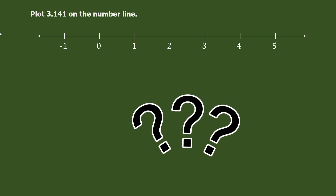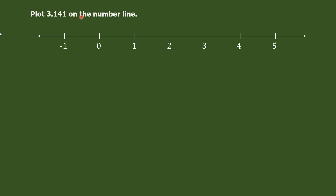You can see a question on your screen: plot 3.141 on the number line. This is quite challenging. First, notice that 3.141 is greater than 3 and less than 4 — it's 3 point something — so we know this number lies between 3 and 4. But exactly where between 3 and 4 does it lie?